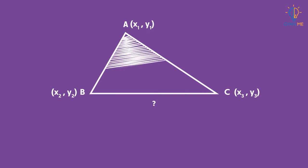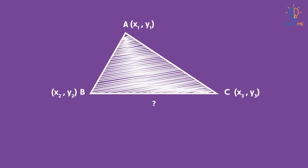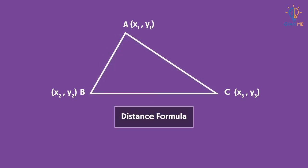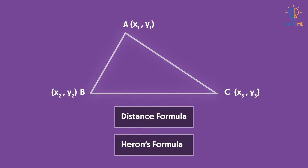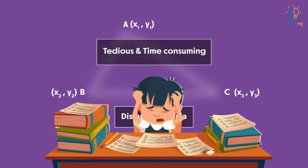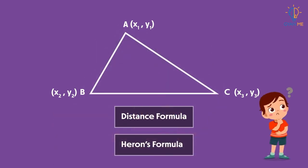But if we are given the coordinates of the vertices of the triangle, can we calculate the area of the triangle? Well, one way is to find the length of the sides using the distance formula and then use Heron's formula. But this method is tedious and time-consuming. So is there any other method? Let's find out.